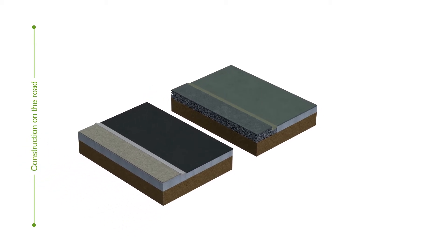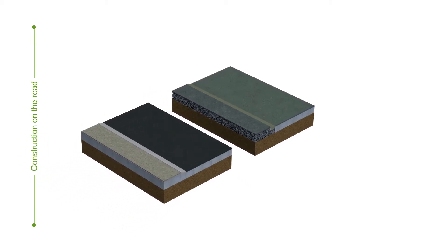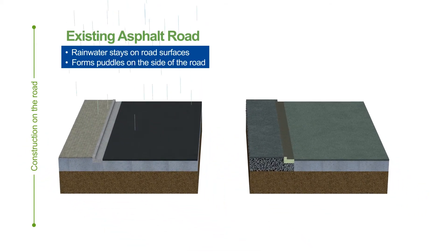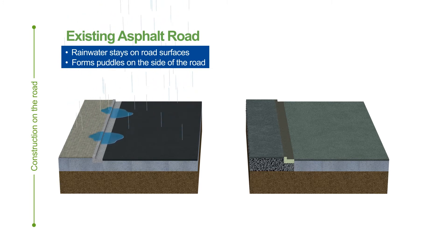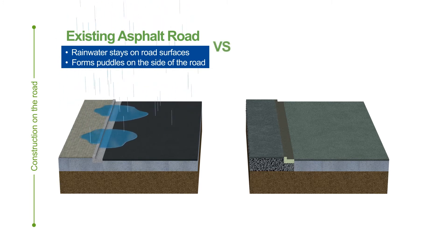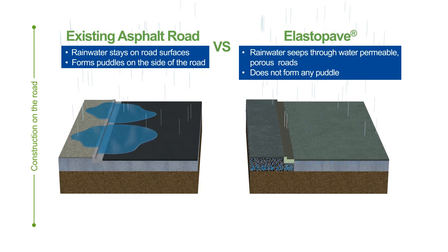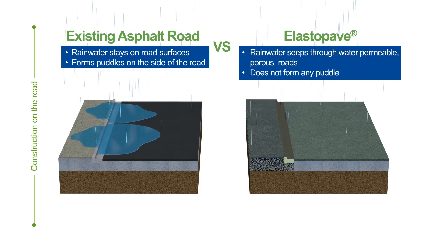By applying this porous pavement, while rainwater stays on the surfaces of asphalt roads and forms puddles, it seeps through roads paved with water-permeable ElastoPave, helping to reduce flooding in cities.